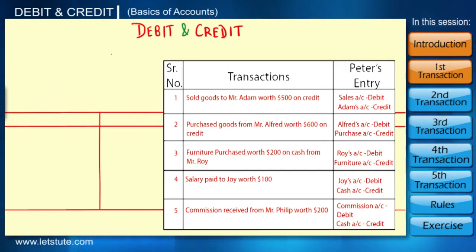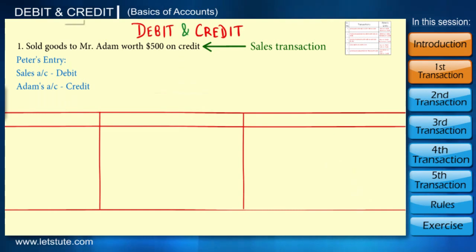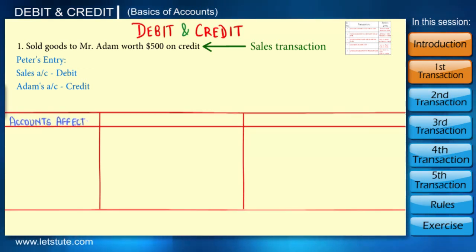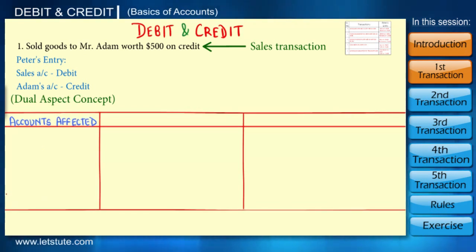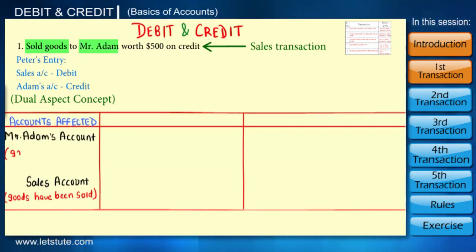The first transaction is a sales transaction. To analyze this, the important thing to do is to find out which are the two accounts that will be affected, as per the dual aspect concept. Here, goods have been sold so the sales account will be affected, and the second would be Mr. Adams' account as the goods are sold on credit.